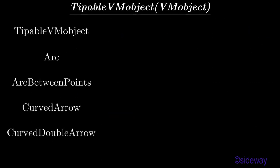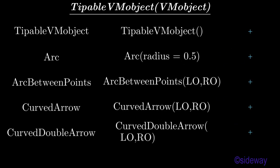One category of Geometry Vectorized Mathematical Object is tipable beam object. Some typical tipable beam objects are: tipable beam object, arc, arc between points, curved arrow, and curved double arrow.